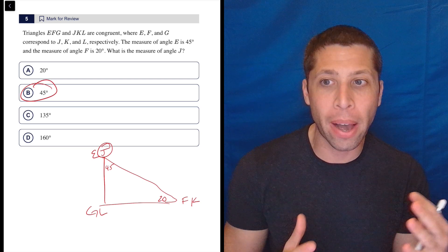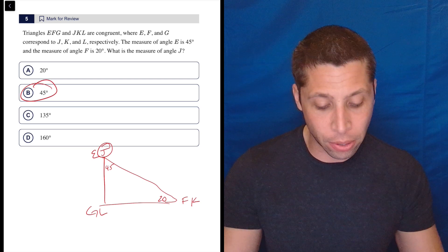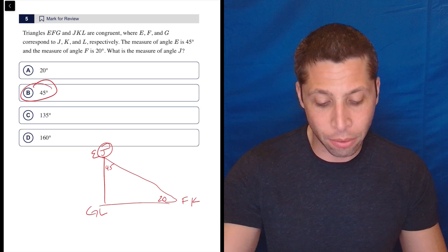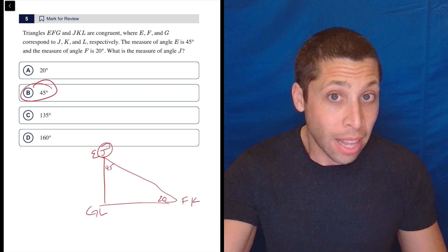So some of you can get this by just thinking about it and recognizing that if they're asking for J, they're also asking for E, which they just give us. That's fine.